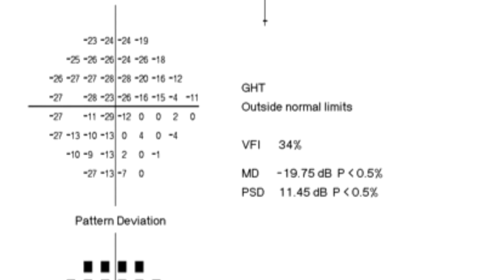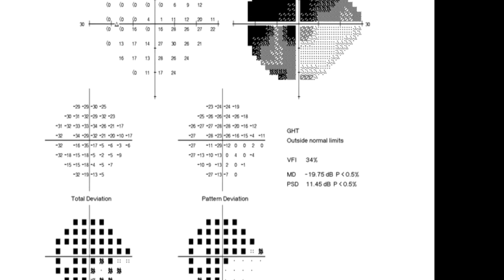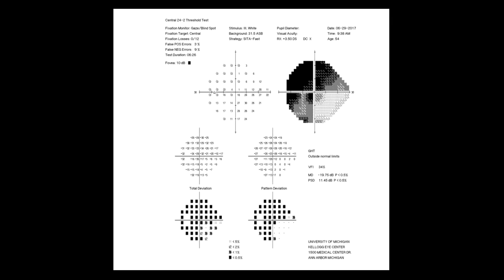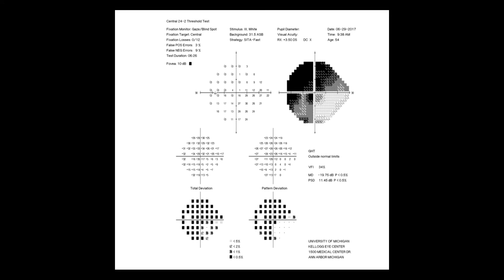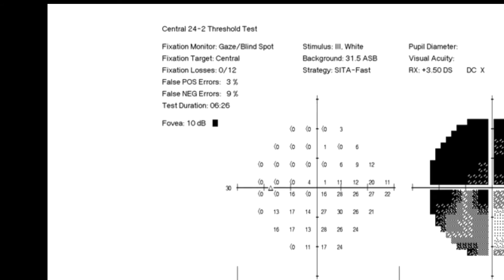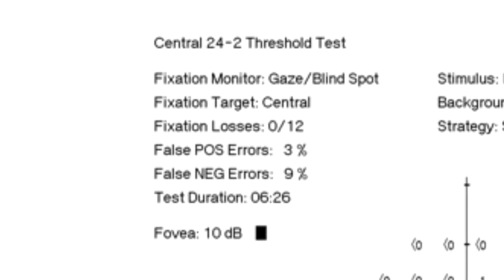But are the results reliable? In other words, was the patient paying attention and following the rules? To answer that question, you must look at the reliability indices. They measure how well the patient cooperated with the rules of the test. Look at fixation losses. They measure how often the patient signaled awareness of the stimulus when it was projected into the physiologic blind spot, where it should not have been seen if the patient kept his or her gaze constantly on the fixation spot.